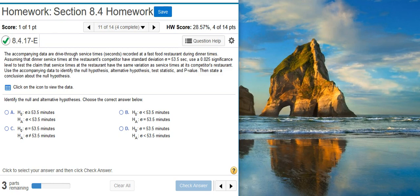Here's our problem statement. The accompanying data are drive-thru service times in seconds recorded at a fast food restaurant during dinner times. Assuming that dinner service times at the restaurant's competitor have a standard deviation of 53.5 seconds, use a 2.5% significance level to test the claim that service times at the restaurant have the same variation as service times at its competitor's restaurant.